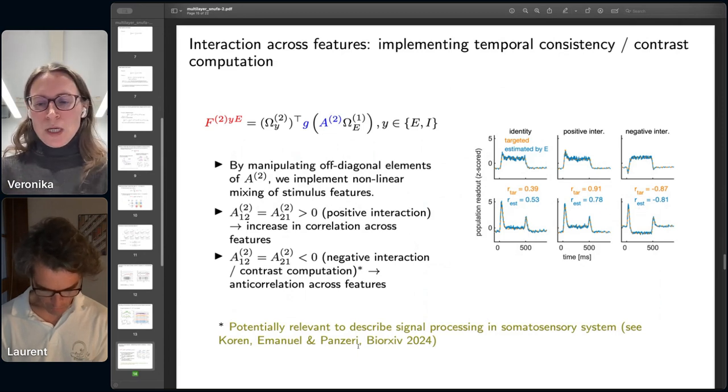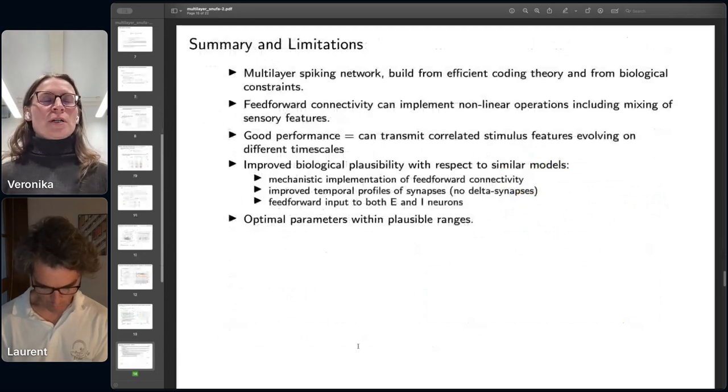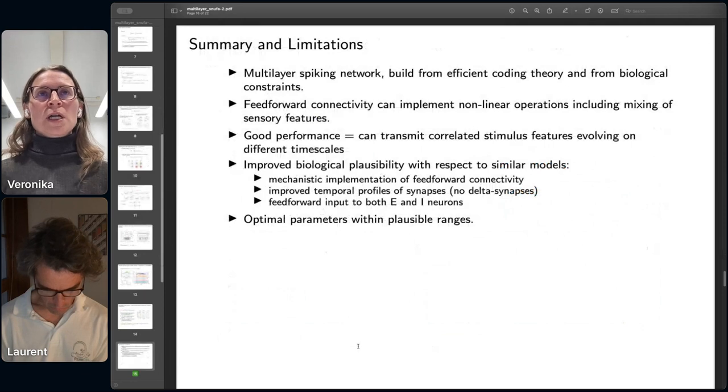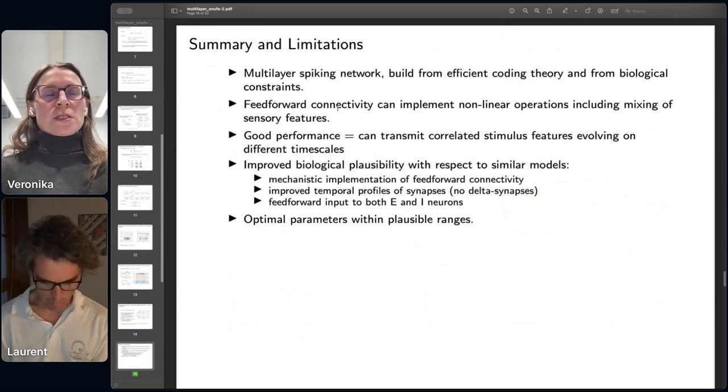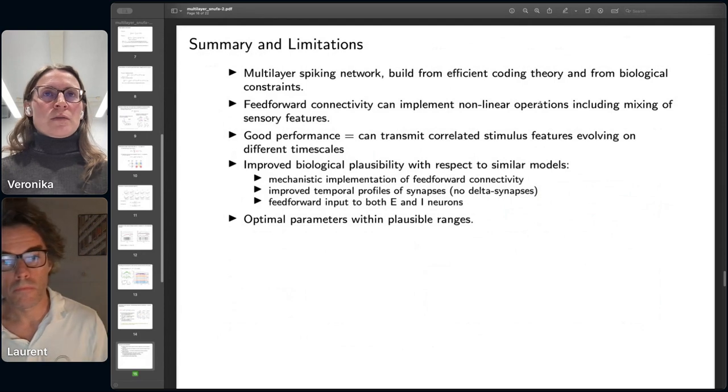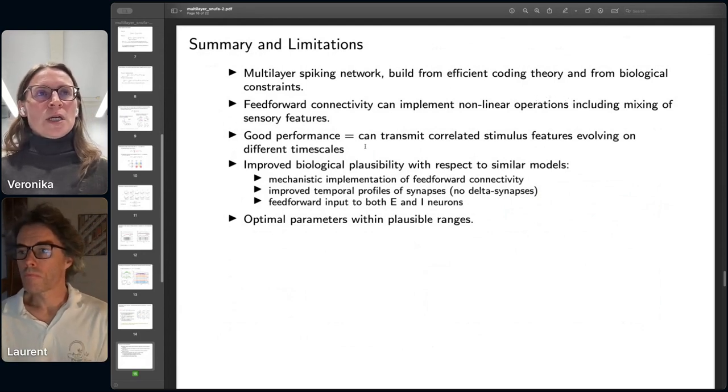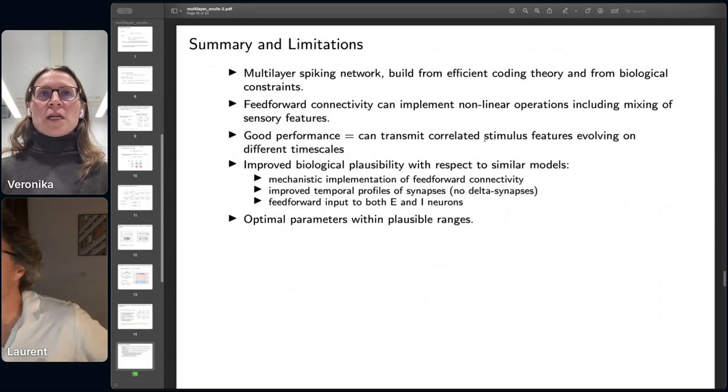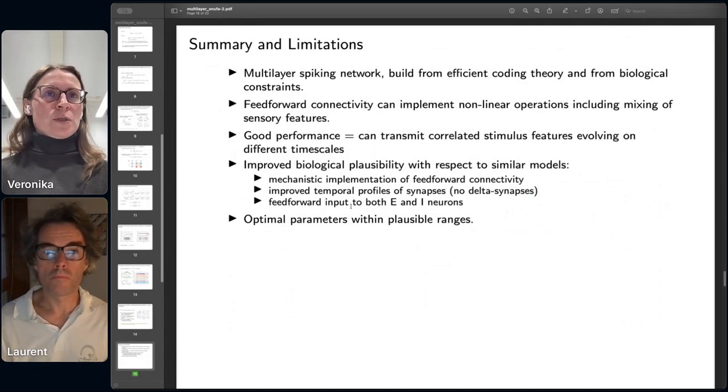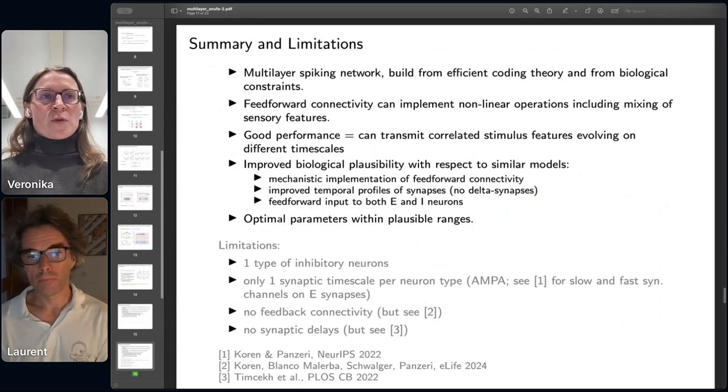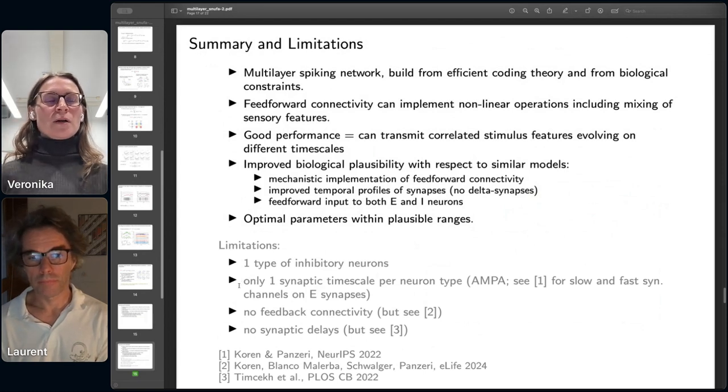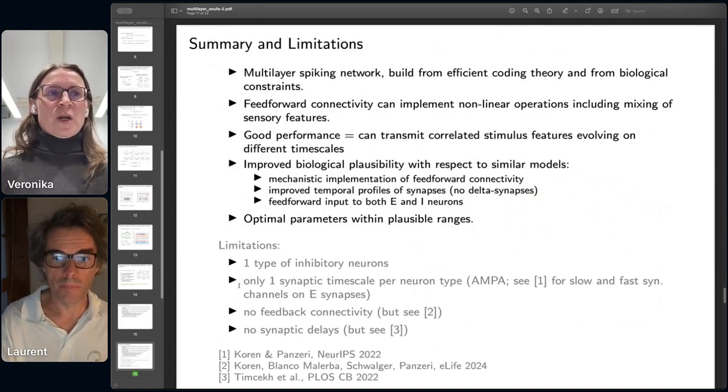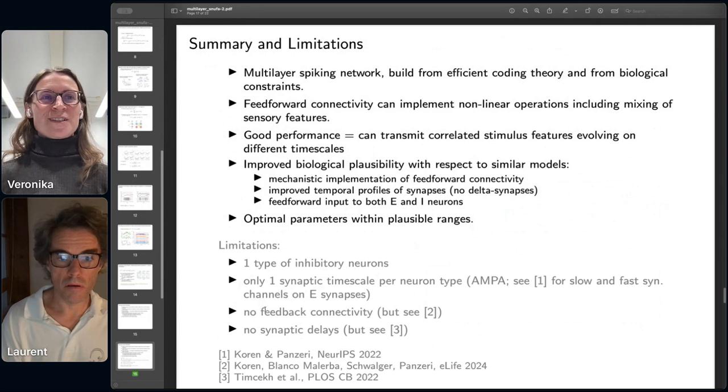With this, I'm going to wrap up. Here we built a multi-layer spiking network. We used efficient coding theory and biological constraints. What is really new is that we can express feed-forward connectivity that can implement a variety of operations, including mixing of sensory features. We achieve good performance. The model can transmit also correlated stimulus features that evolve on different time scales. We also improve in biological plausibility with respect to similar models. The model also has a couple of limitations, but none of them seems to be too drastic. With work in progress, we hope to also maybe include some of them in further developments. With this, I'm happy to take questions. Thank you for your attention.